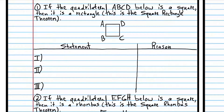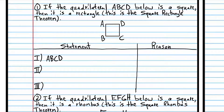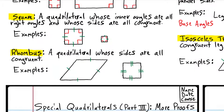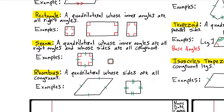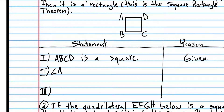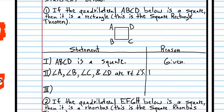We're going to start out with the given information: ABCD is a square. If ABCD is a square, look at your definitions — that means the angles are all right angles. That's just the definition of a square. So angle A, angle B, angle C, and angle D are right angles. Definition of a square.